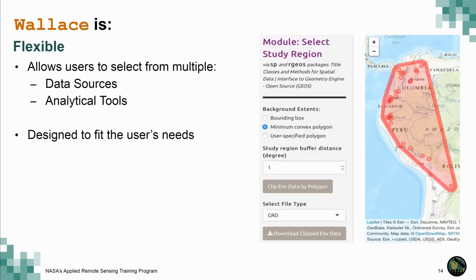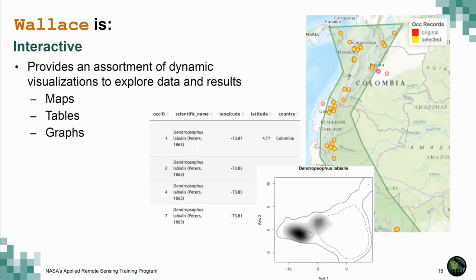Wallace is flexible — it allows users to select from a multitude of data sources and analytical tools. There is no single correct one; it all depends on the user's needs and what the study calls for. Wallace is also interactive, providing an assortment of dynamic visualizations such as maps, tables, and graphs that allow users to explore their data and results.